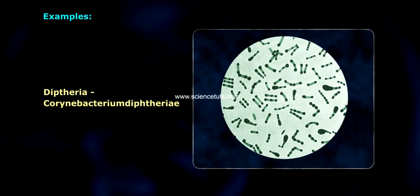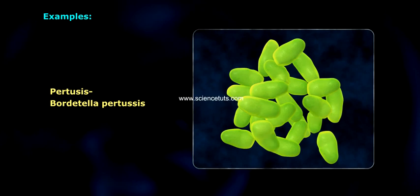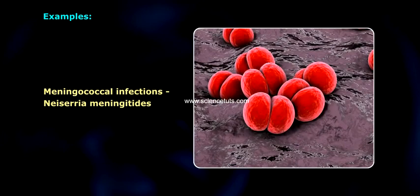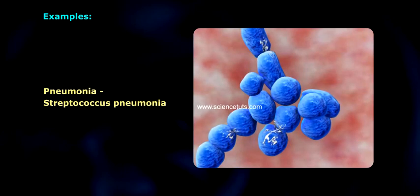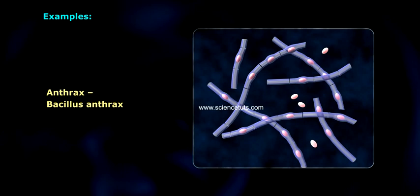Examples of bacterial diseases in animals: Diphtheria caused by Corynebacterium diphtheriae, pertussis caused by Bordetella pertussis, meningococcal infections caused by Neisseria meningitidis, tuberculosis caused by Mycobacterium tuberculosis, pneumonia caused by Streptococcus pneumoniae, and anthrax caused by Bacillus anthracis.